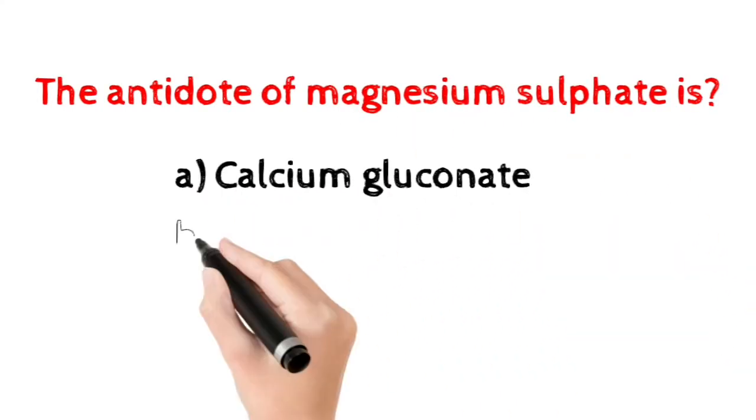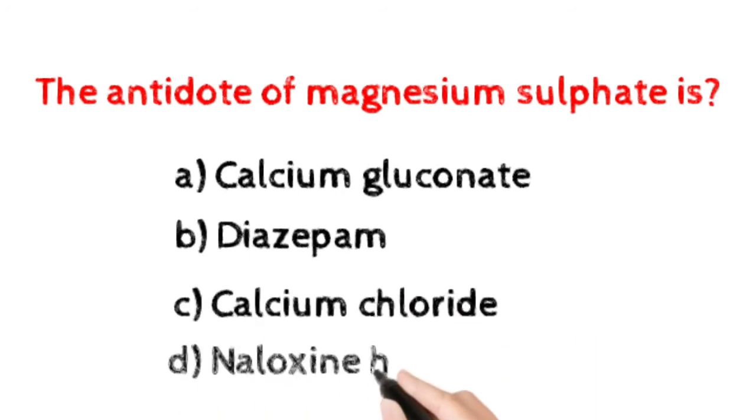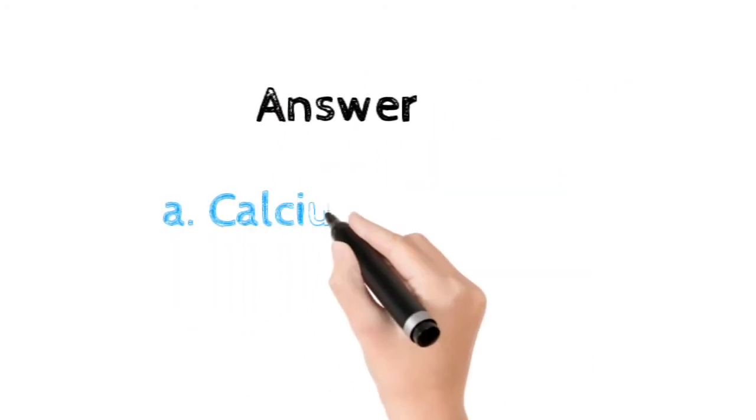Number seven: Antidote for magnesium sulfate is? Option A: calcium gluconate. Option B: calcium carbonate. Option C: calcium chloride. Option D: naloxone hydrochloride. Here the correct answer is option A, calcium gluconate.